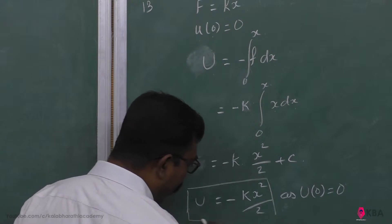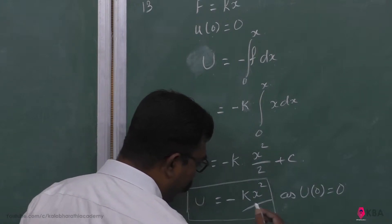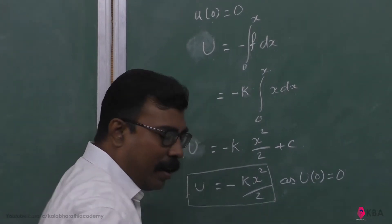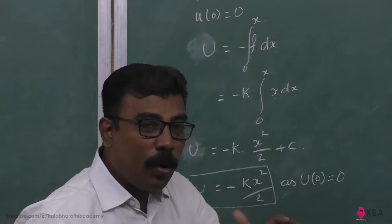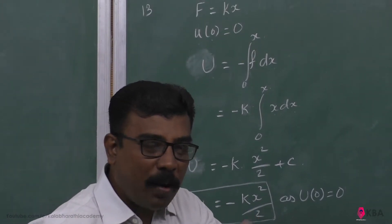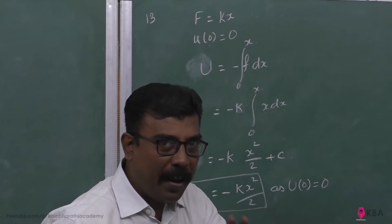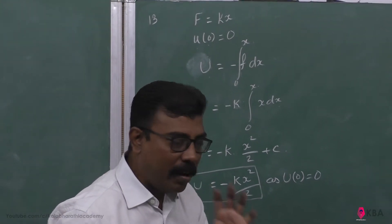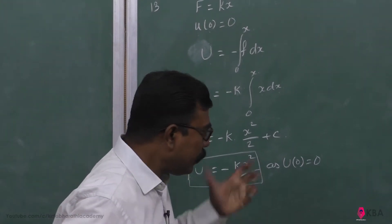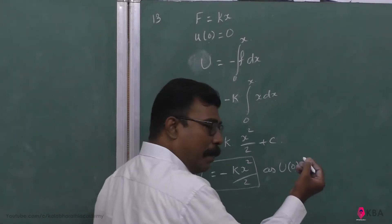So, U will be 0 at x equals 0. Now, y equals Ax squared is an upward parabola, but y equals minus Ax squared is a downward parabola. And this is the shape of a parabola opening downward.